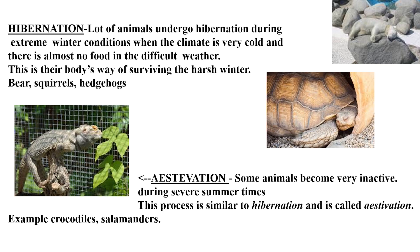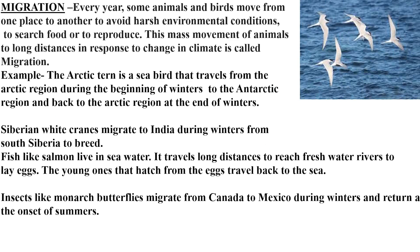Every year some animals and birds move from one place to another to avoid harsh environmental conditions — in search of food, to reproduce, or to escape extreme climate. This mass movement to long distances in response to climate change is called migration. The arctic tern is a seabird that travels from the arctic to the antarctic at the start of winter and back at the end, making the longest migration of about 40,000 kilometers every year, earning it the title 'champion of migration.'